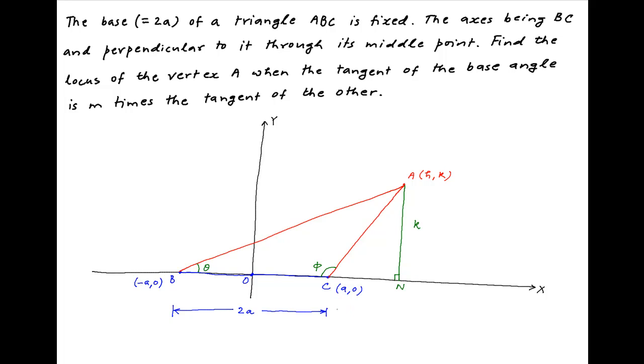The vertical distance of point A from the x-axis is K and the horizontal distance of point A from the y-axis is H. Therefore, the distance CN is equal to H minus A.